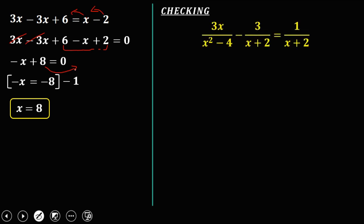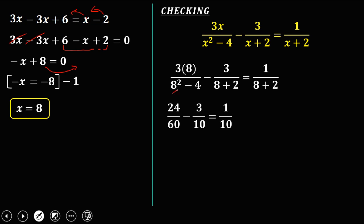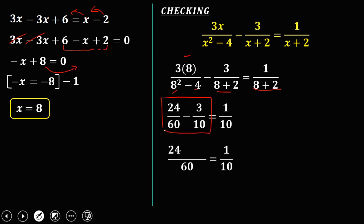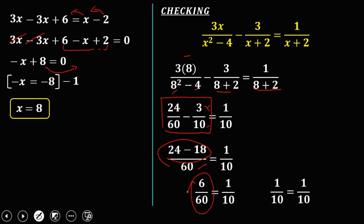Check the answer: substitute x equals 8 into the original equation. We get 64 minus 4 is 60, then 10 and 10 and 24. Finding the LCD of 60: 60 divided by 10 is 6, times 3 is 18, and 24 minus 18 is 6. So 6 over 60 simplifies to 1 over 10, and 1 over 10 equals 1 over 10. Therefore, the solution is x equals 8.